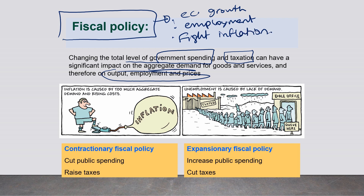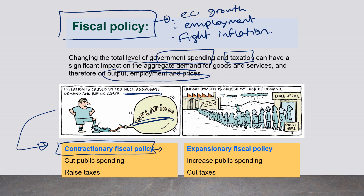Inflation is caused by too much aggregate demand and rising costs. To fight inflation, a government uses a contractionary fiscal policy to decrease aggregate demand. They do this by cutting public spending and by raising taxes.